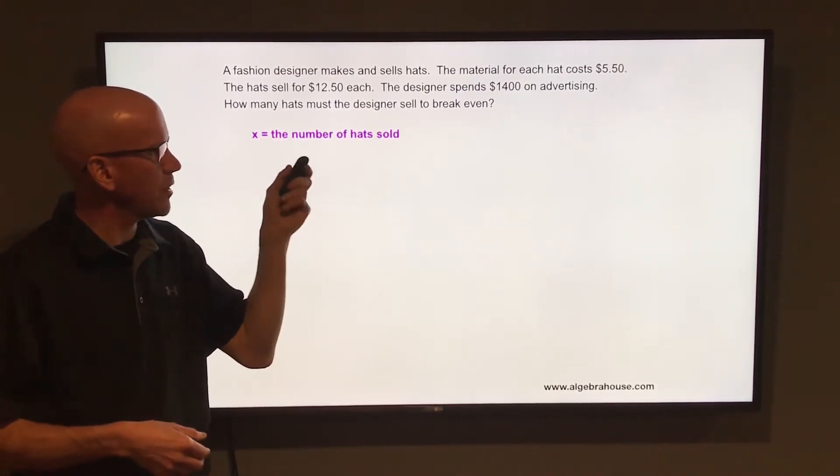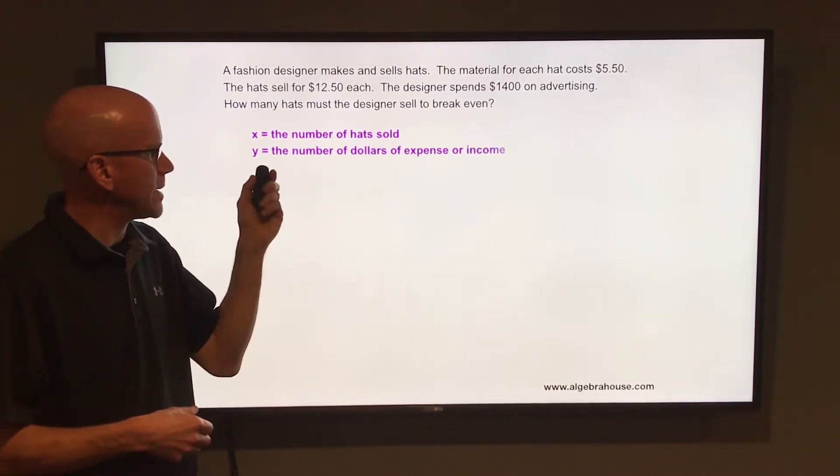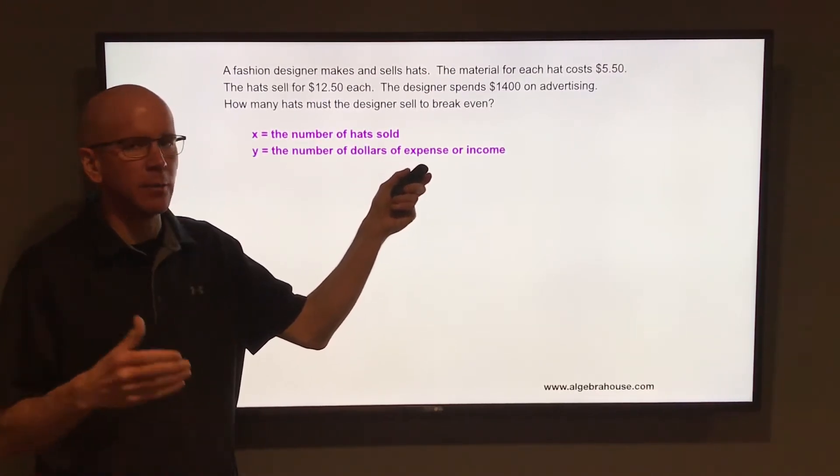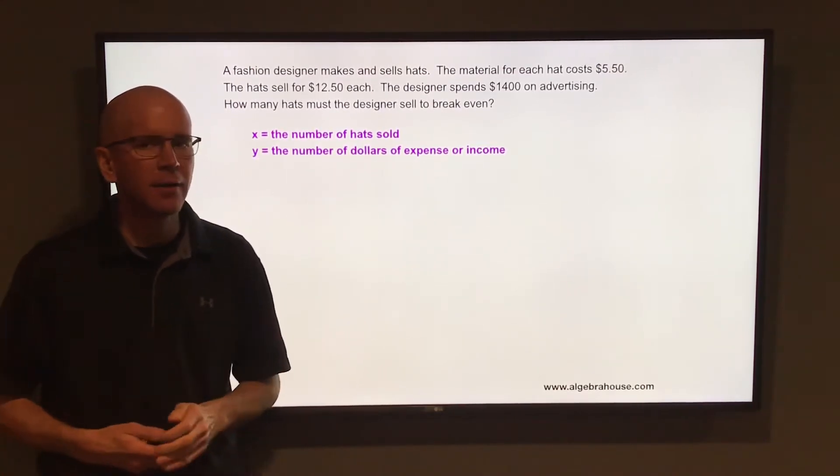We're going to let X equal the number of hats to be sold, because that's what we're looking for. That's the unknown. Also going to let Y equal the number of dollars of expense in one equation. In another equation, we're going to let Y equal the number of dollars of income.